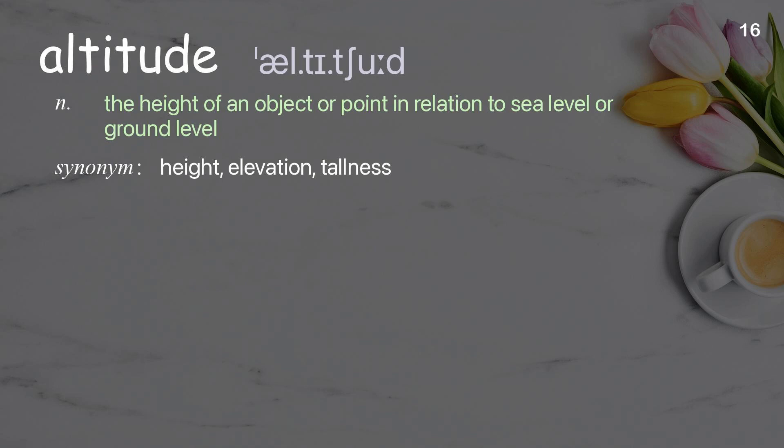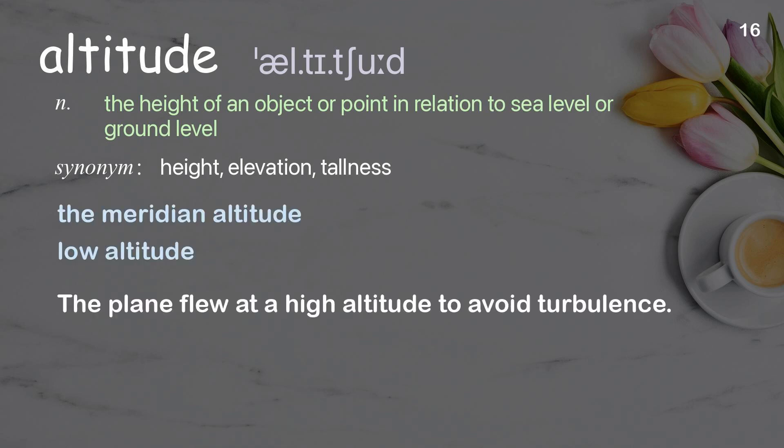Altitude: The height of an object or point in relation to sea level or ground level. Examples: The meridian altitude. Low altitude. The plane flew at a high altitude to avoid turbulence.